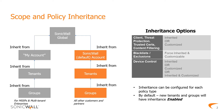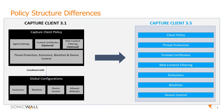As you will remember from a previous session, the most important feature introduced with Capture Client 3.5 is that of scope. Scope also introduces a hierarchy of how policies are inherited from tenants to groups. Inheritance differs based on the policy type. Client, threat protection, trusted certificates, and web content filtering can be set either to inherit or not. Device control supports optional inheritance of rules along with custom rules for the specified scope. And blacklists and exclusions enforce inheritance but also support custom entries.